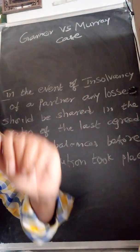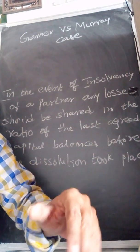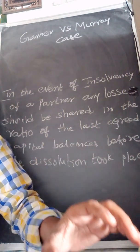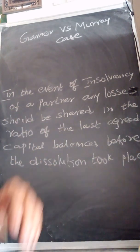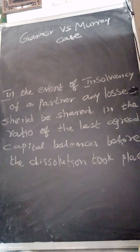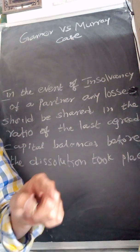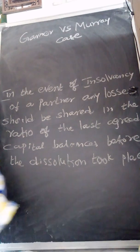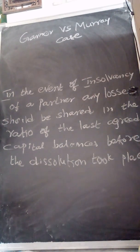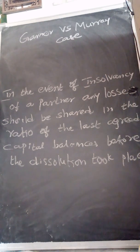For example, if A, B, and C are partners and C becomes insolvent, A and B are the solvent partners. The debit balance in the insolvent partner's capital account — where the debit side is more than the credit side — is said to be a capital loss. That capital loss is to be borne by the solvent partners in their capital ratio. There is a difference between a realization loss and a capital loss.